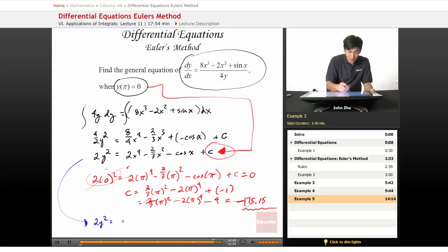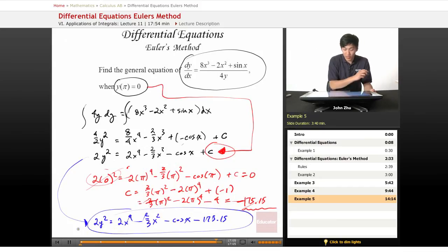And our general equation will become, bringing this down here: 2y squared equals 2x to the 4th minus 2 thirds x squared minus cosine of x minus 175.15. And there is our general equation.